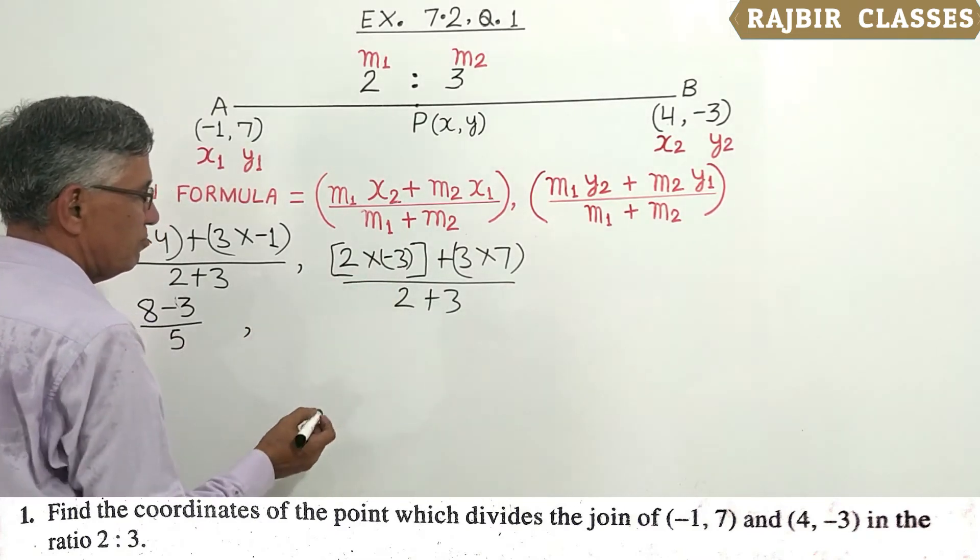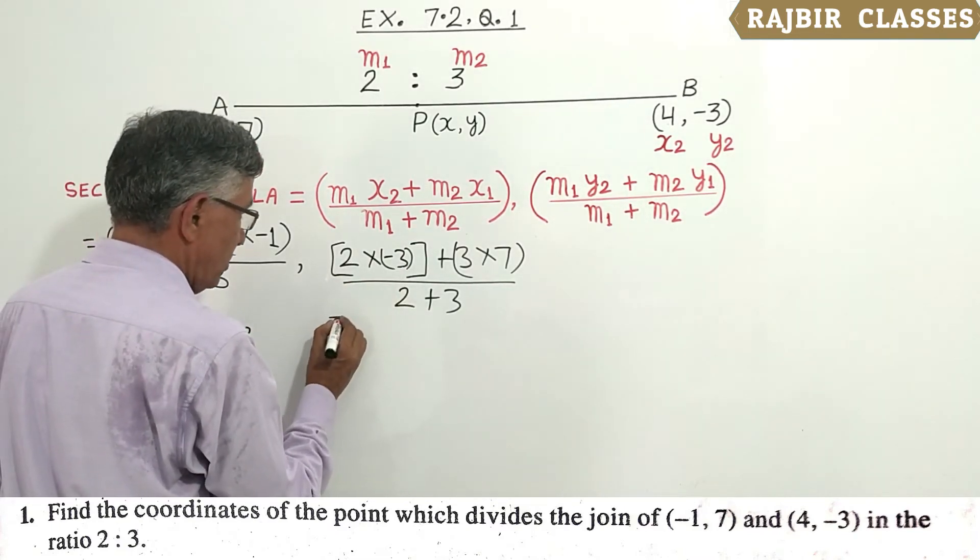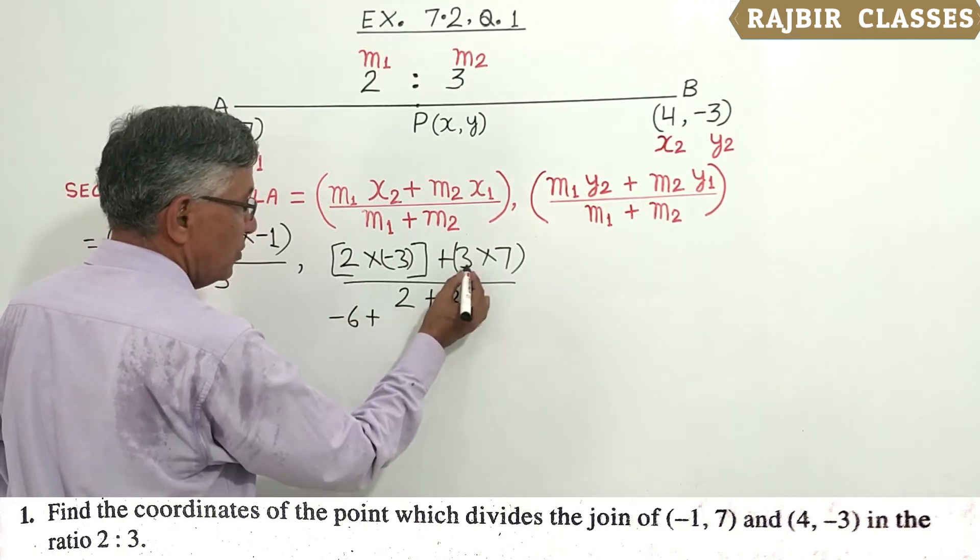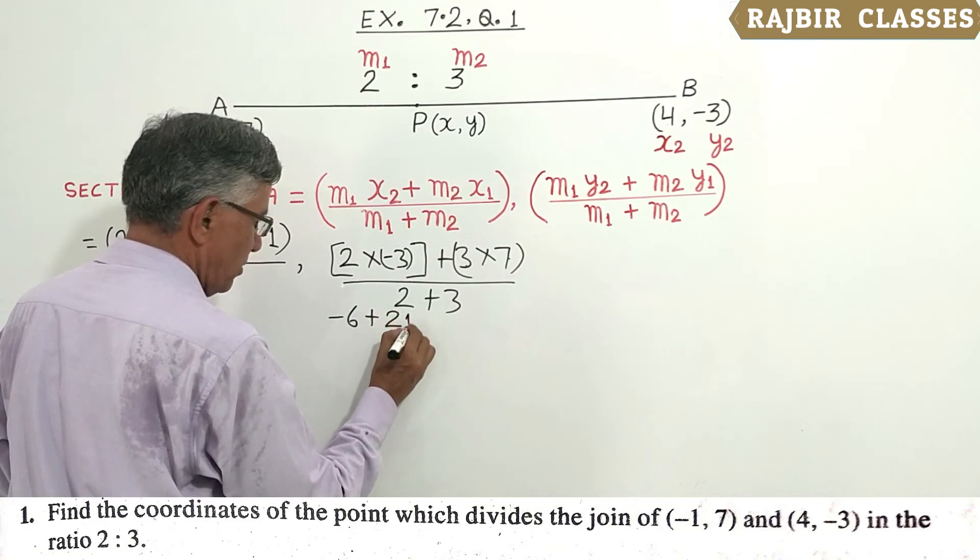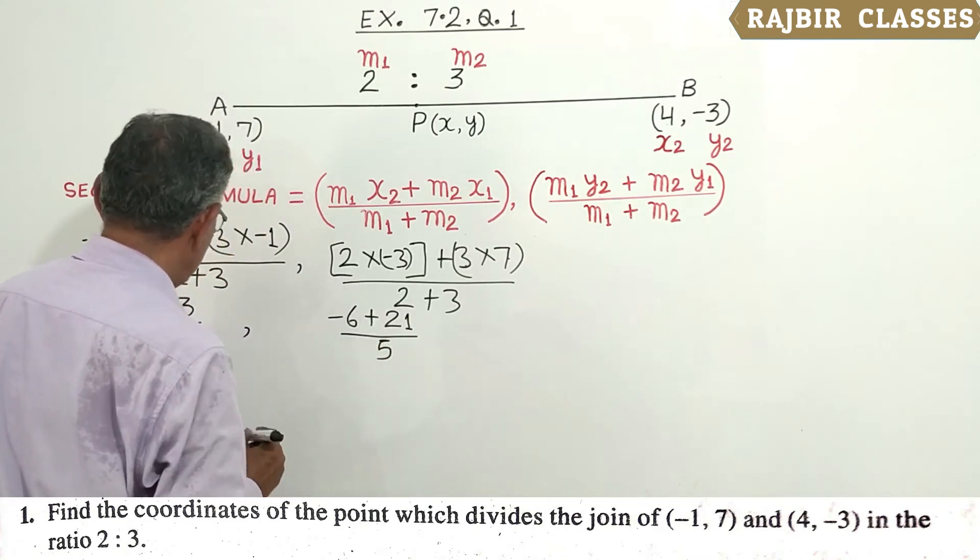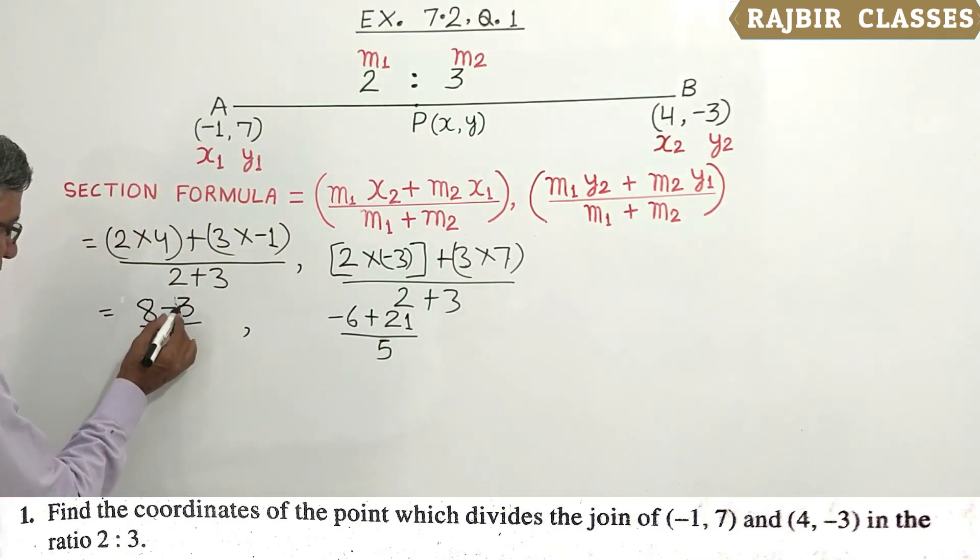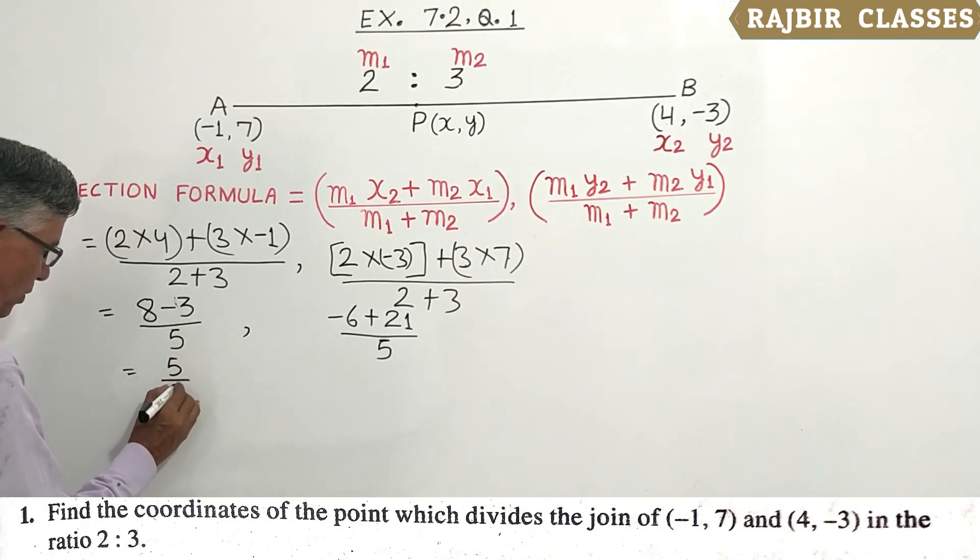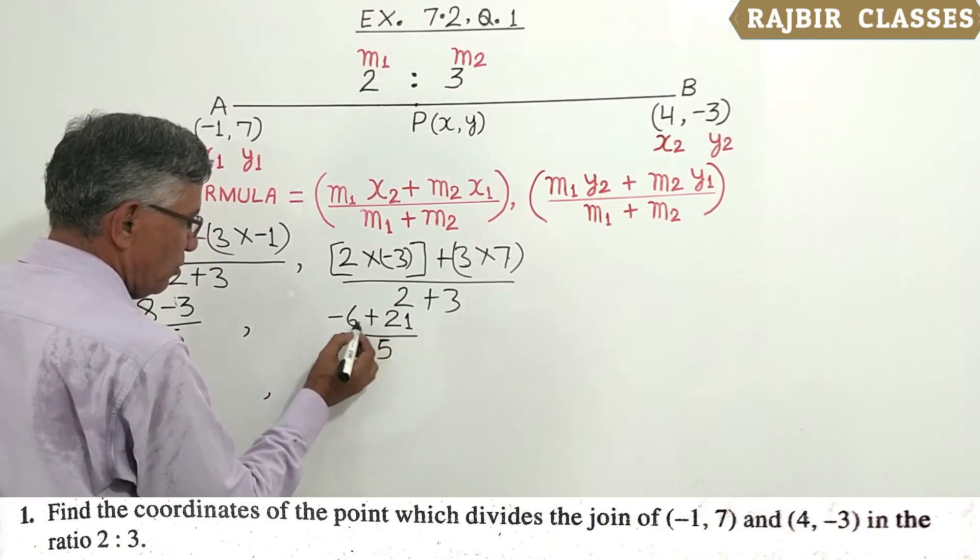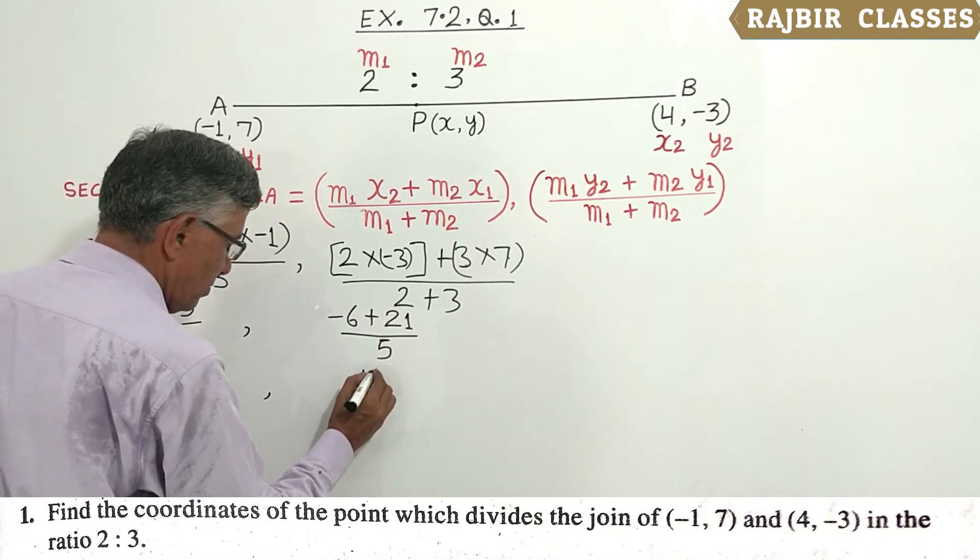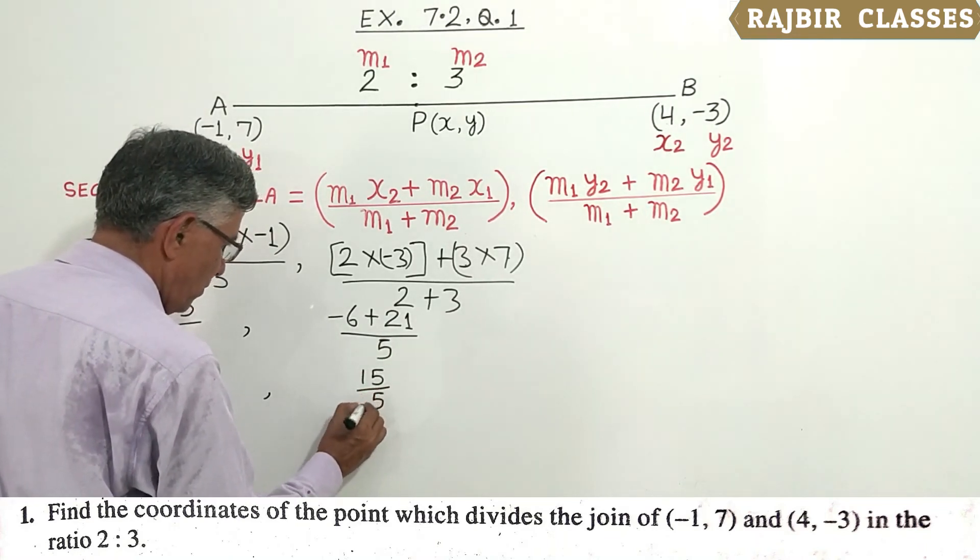For y-coordinate: 2 into -3 equals -6, plus 3 into 7 equals 21, divided by 2 plus 3, which is 5. That gives us 15 upon 5.